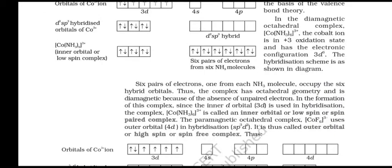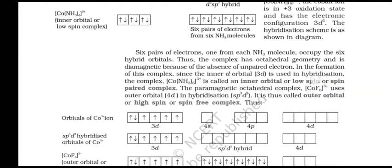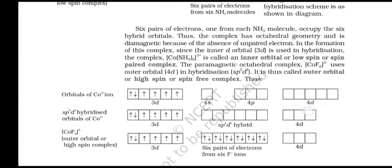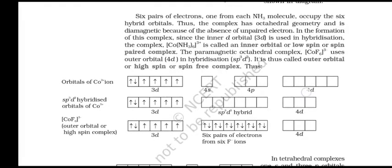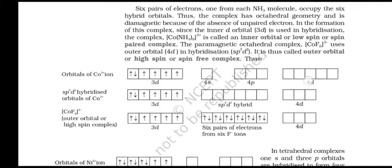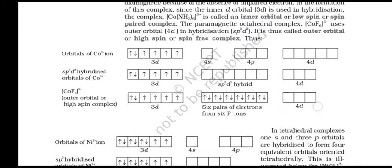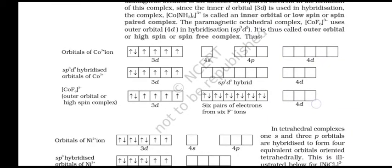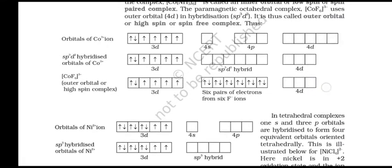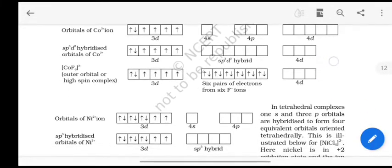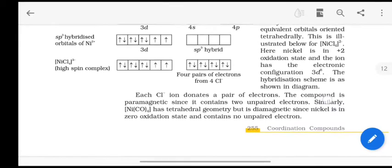In the diamagnetic octahedral complex [Co(NH3)6]3+, the cobalt ion is in the +3 oxidation state with electronic configuration 3d6. Six pairs of electrons, one from each NH3 molecule, occupy six hybrid orbitals. The complex has octahedral geometry and is diamagnetic due to absence of unpaired electrons. Since the inner d orbital (3d) is used in hybridization, the complex is called an inner orbital or low spin or spin-paired complex. The paramagnetic octahedral complex [CoF6]3- uses outer orbital (4d) in hybridization and is called an outer orbital or high spin or spin-free complex.